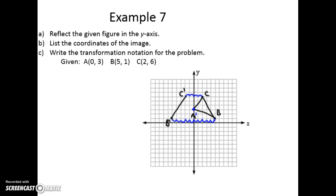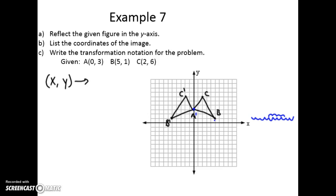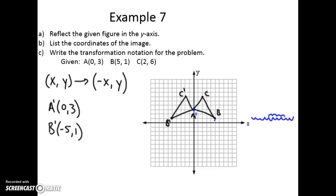This is my new shape — you can see it's just reflected or folded over the y-axis. The transformation rule for reflecting over the y-axis is to change the sign of x. So a prime is (0, 3), b prime is (-5, 1), and c prime is (-2, 6).